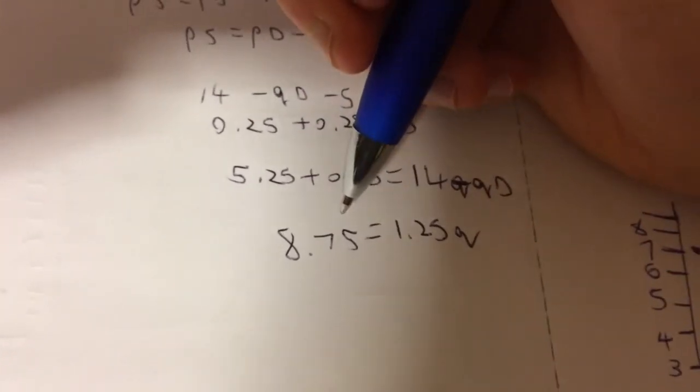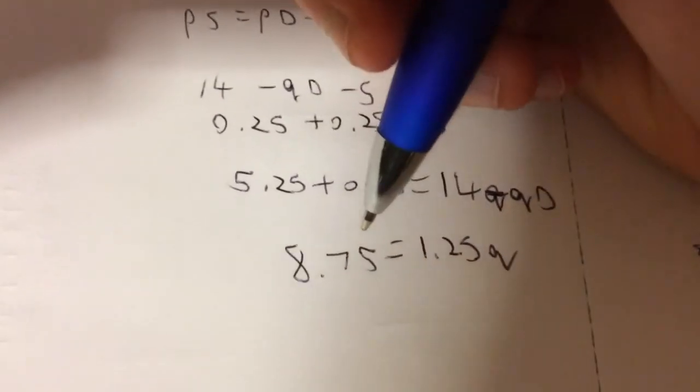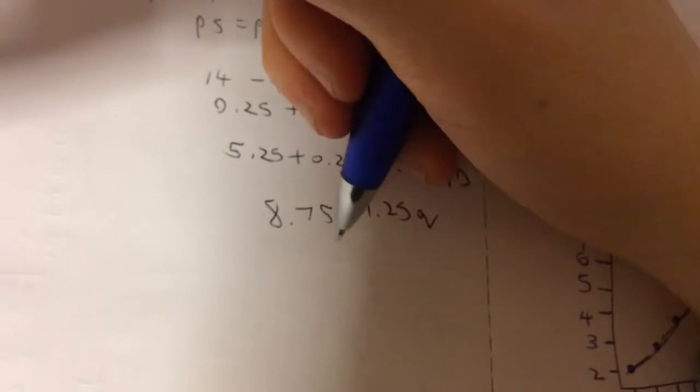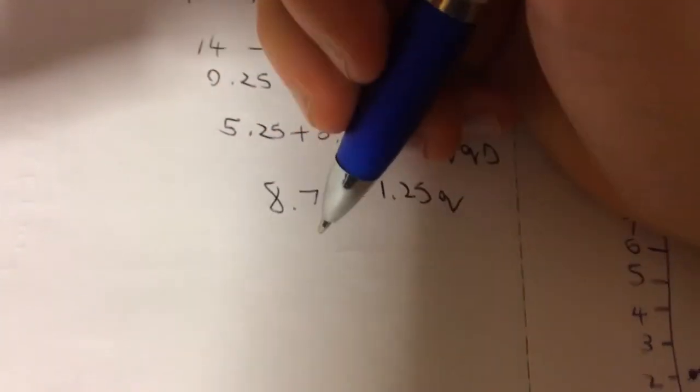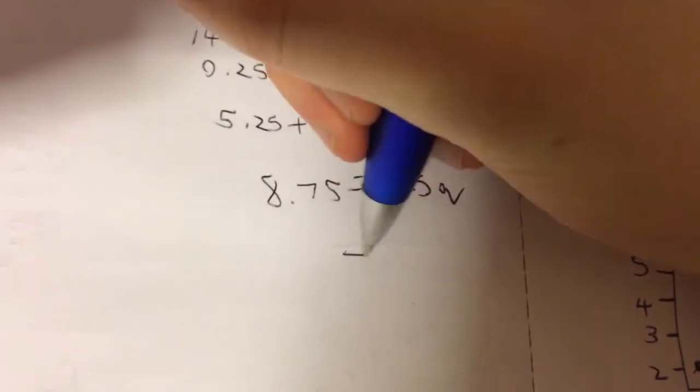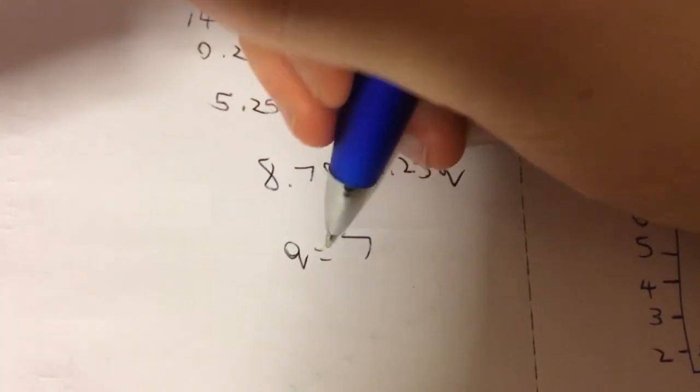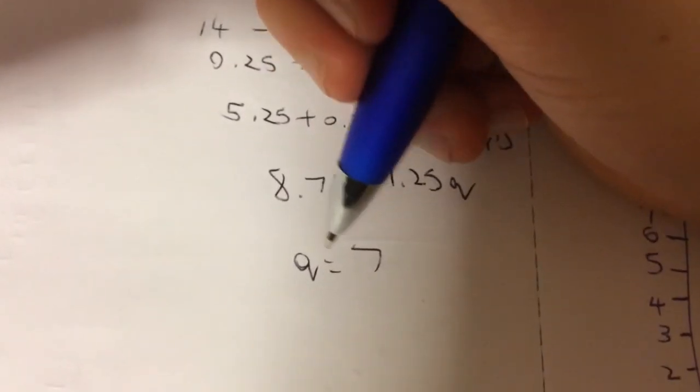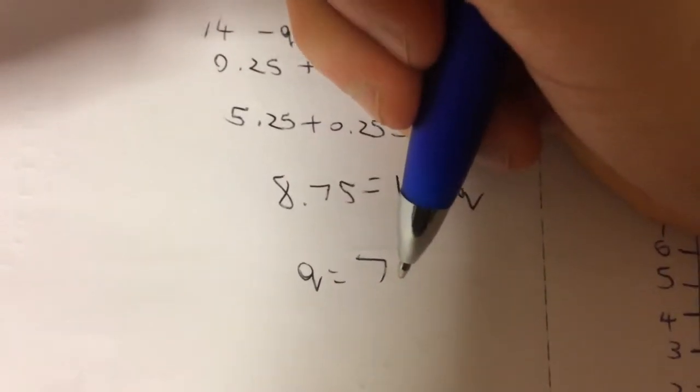So if we add them into the equations, 8.75 divided by 1.25 equals 7. So the quantity with tax is 7.